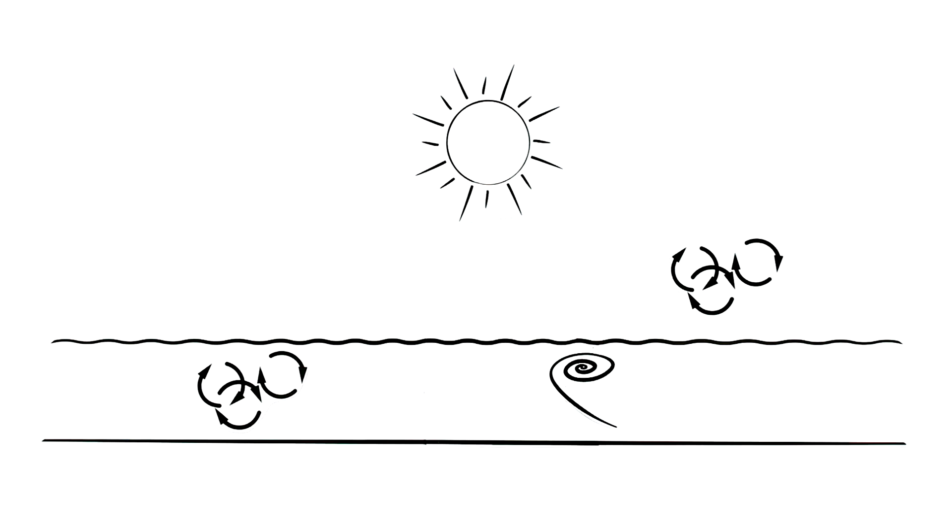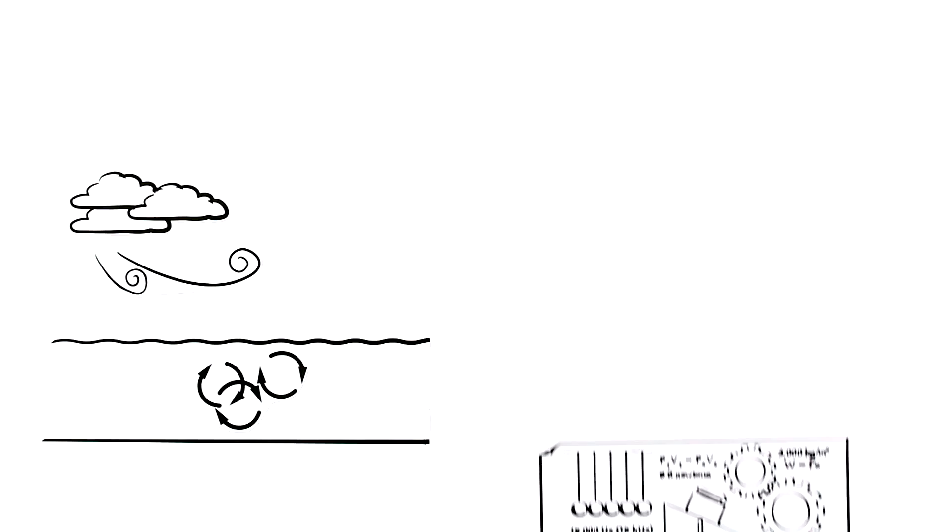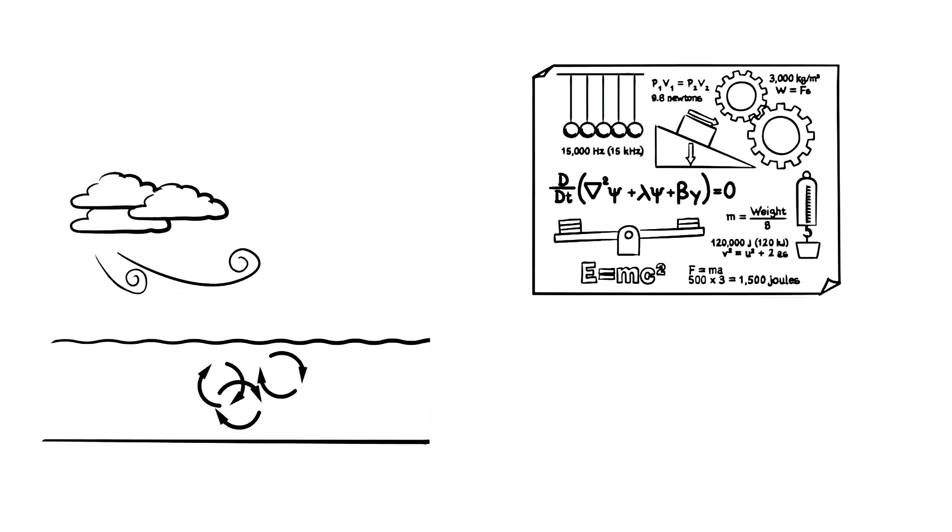However, it is still unknown how exactly the energy generated by these processes is transported into the oceans and the atmosphere. Turbulences and waves play important roles in all types of motion. They are all following different laws of physics and are interlinked with each other through numerous complex processes.